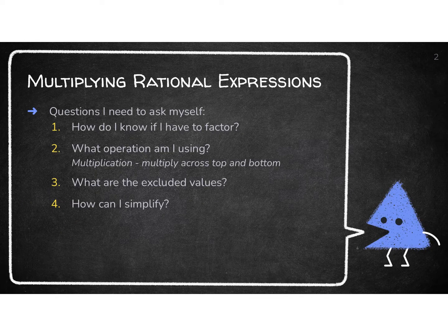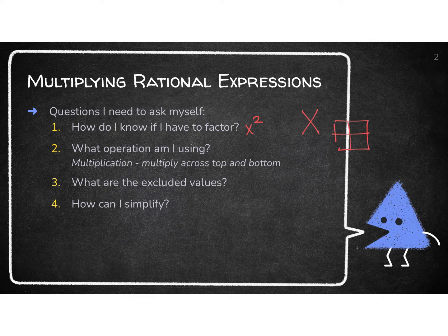Here are the steps — there's only one new one here. First of all, how do you know if you need to factor or not? Anytime you have x squared happening — x to the 2nd power — you should be using the X-in-the-box method. You need to factor. But remember: always, always, always look for a GCF first.